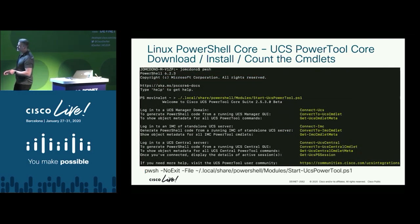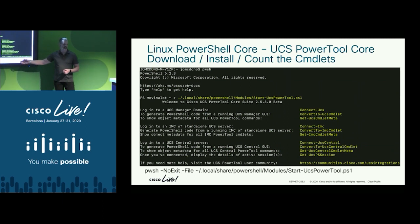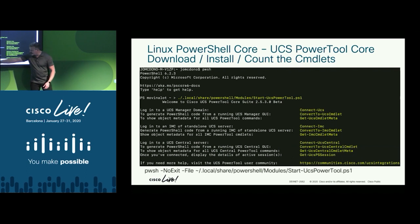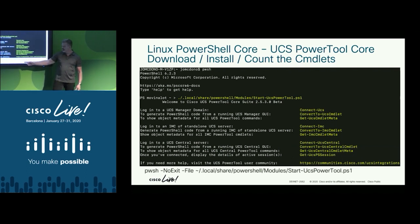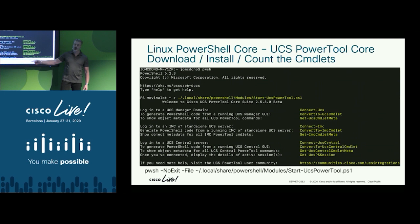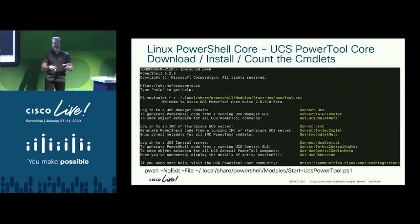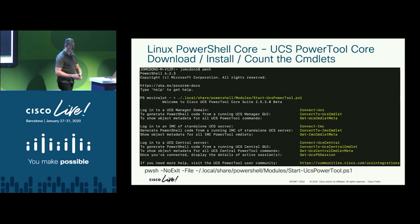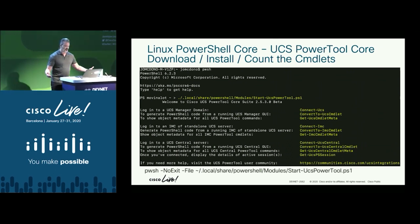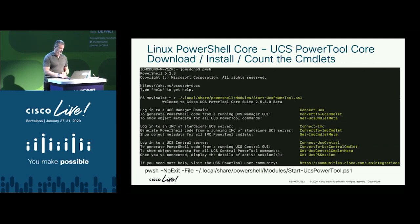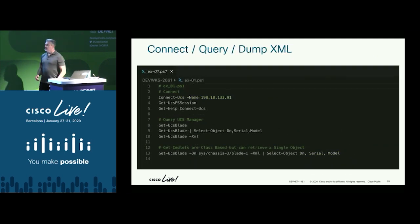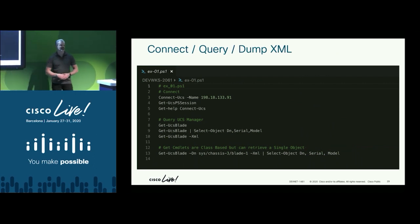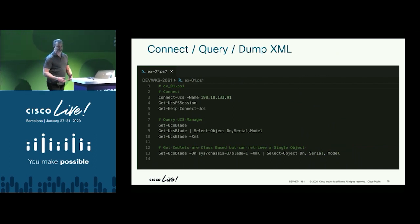To start PowerTool on Linux, type pwsh to enter PowerShell. You can then run the startup file from your home directory at .local/share/PowerShell/modules, or run a single command that drops you into PowerShell and loads all UCS PowerTool modules. Once you have it, you connect to UCS Manager, query, configure, and then disconnect — that's the basic workflow.